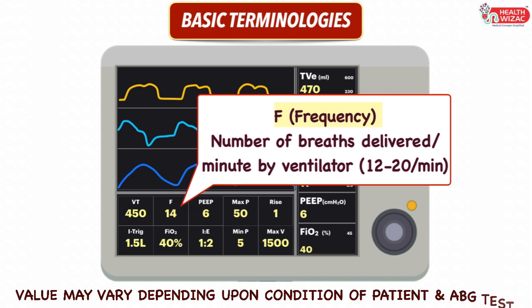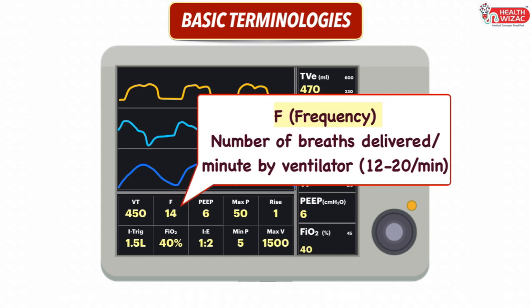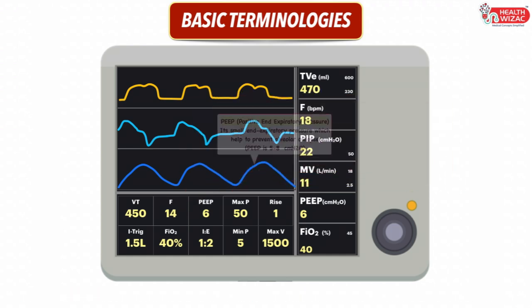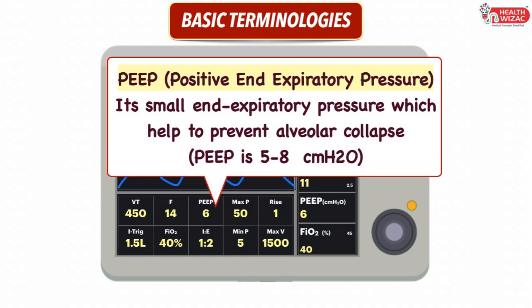But the frequency value may vary depending upon the condition of the patient and the ABG report. Next is PEEP, or Positive End-Expiratory Pressure, which is a small end-expiratory pressure that helps to prevent alveolar collapse. Normally it is set in the range of 5–8 cm of water.